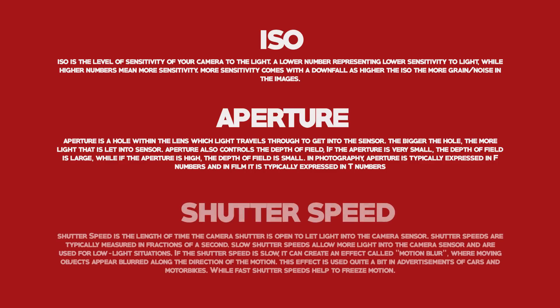Shutter speed is the length of time the camera shutter is open to let light into the camera sensor. Shutter speeds are typically measured in fractions of a second. Slow shutter speeds allow more light into the camera sensor and are typically used in low light situations. If the shutter speed is slow, it can create an effect called motion blur, where moving objects appear blurred along the direction of motion. This effect is used quite a bit in advertisements of cars and motorbikes, while faster speeds help freeze the motion.